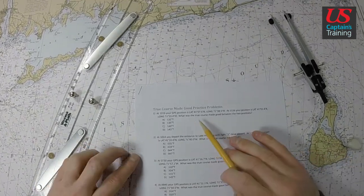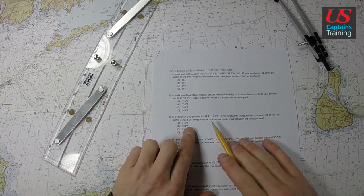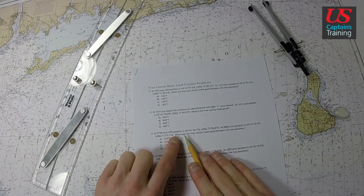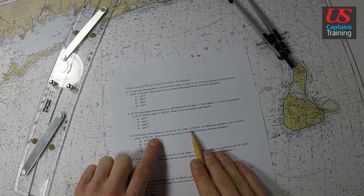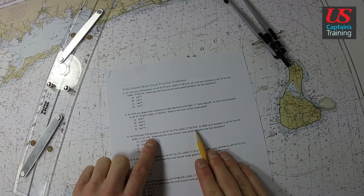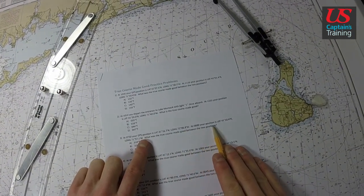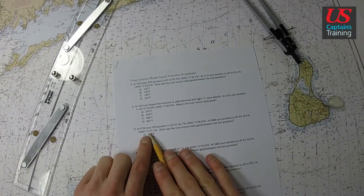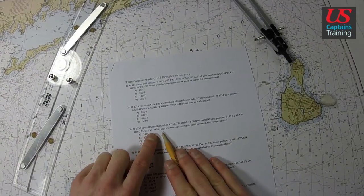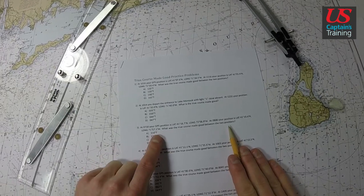Let's look at true course made good practice problem 3. It says at 7:30 your GPS position is 41 degrees 16.7 minutes north, longitude 72 degrees 06.8 minutes west. At 8:00 your position is 41 degrees 10.4 minutes, and 71 degrees 57.1 minutes. What's the true course made good between these positions?